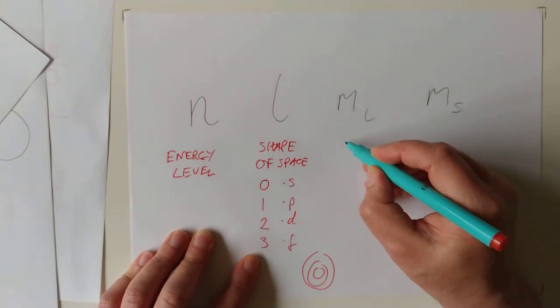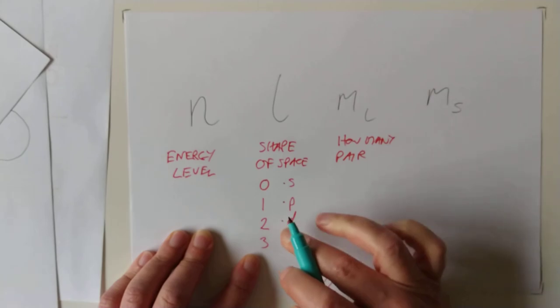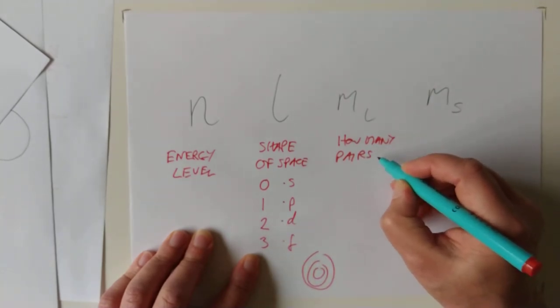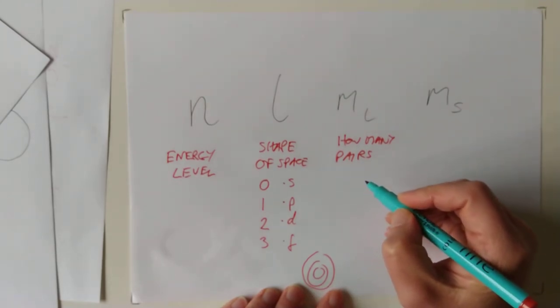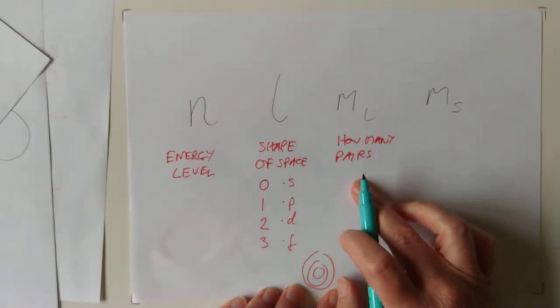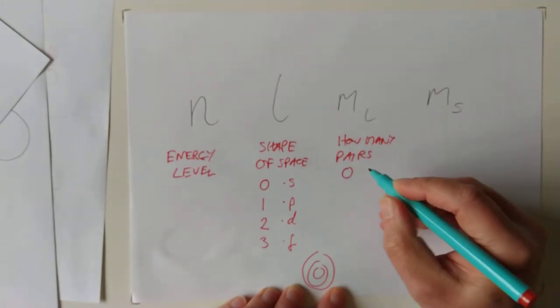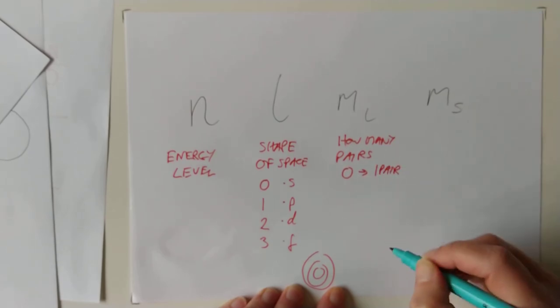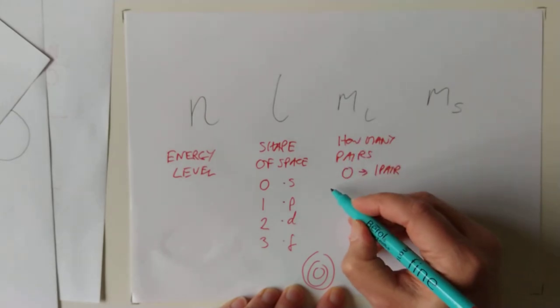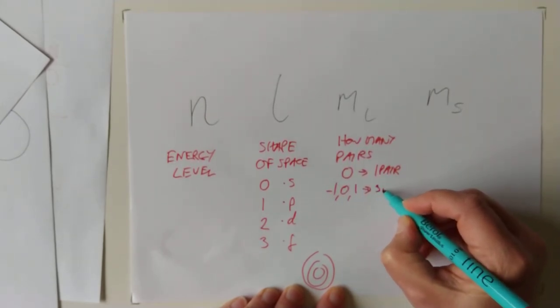ML tells you how many pairs of electrons there are in a particular type of orbital. And it has numbers, but the numbers are not the answer. The number of values that you have is the answer. So if ML is 0, that is a single value, so that will be one pair of electrons. If ML is negative 1, 0, 1, that is three pairs of electrons.